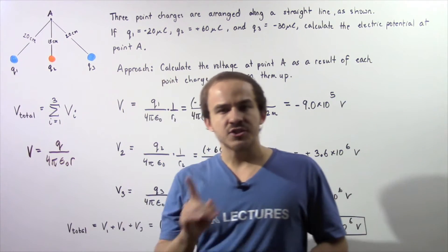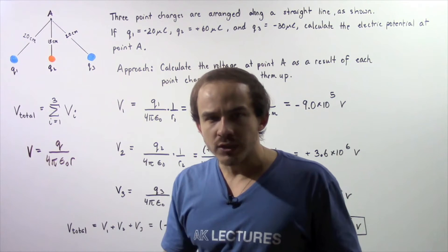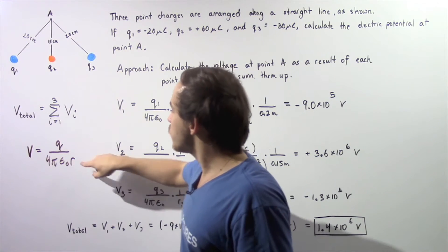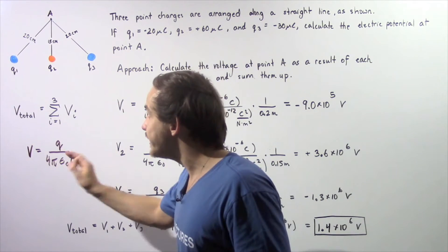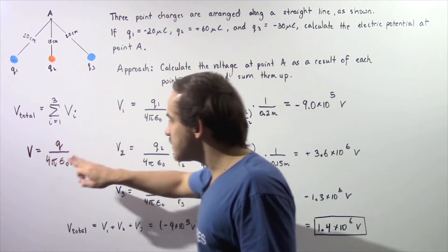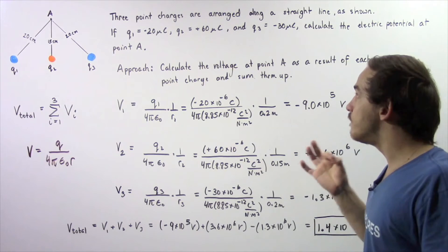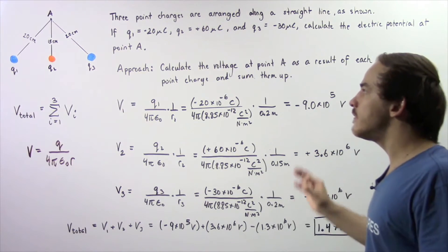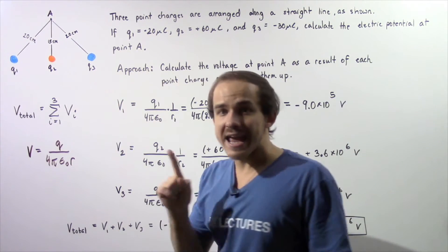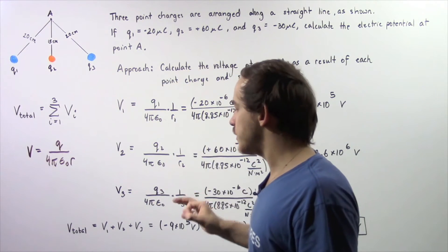In the previous lecture, we were able to derive an equation that gives us the voltage as a result of a single stationary point charge a certain distance R — simply the distance between the point and our electric point charge. We need to apply this equation to each one of these charges, calculate the voltage at point A as a result of each charge, and then, because voltage is a scalar and not a vector, we simply take the algebraic sum of our three voltages.